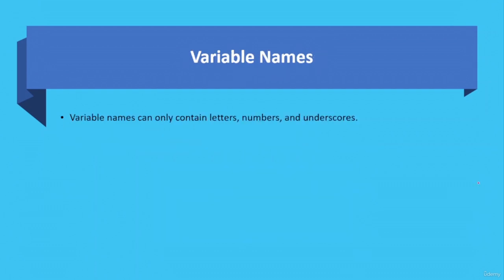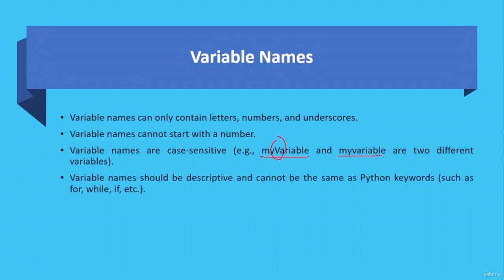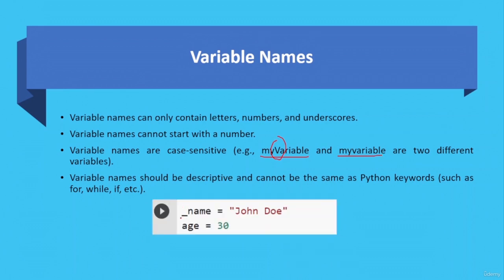Variable names can only contain letters, numbers, and underscores, but they cannot start with a number. Variable names are also case-sensitive — for example, 'myVariable' with a capital V and 'myvariable' with all small letters are two different variables. Variable names should be descriptive and cannot be the same as Python keywords such as 'for', 'while', 'if', etc. You can start a variable with an underscore, combine numbers with names such as 'name1', but you cannot start a variable with a number.